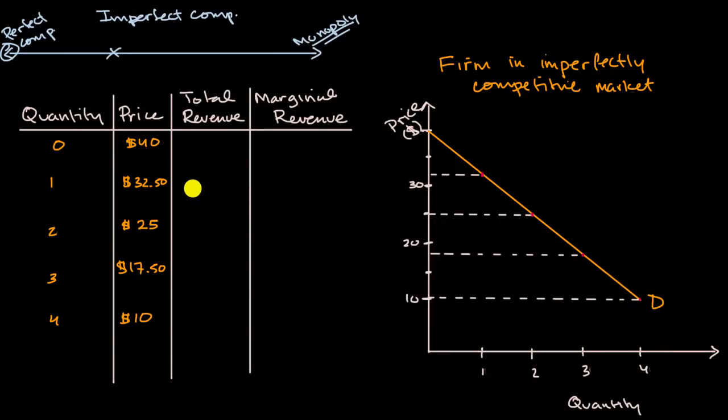But what's going to be really interesting is to think about what is going to be the marginal revenue, especially the marginal revenue in a world where if they sell one unit, they get $32.50. But when they sell two units, it's not like they'll get $32.50 for one of those units and then they'll get $25 for the second unit.